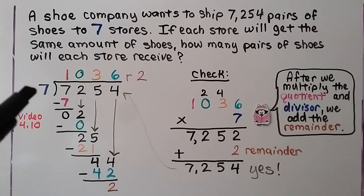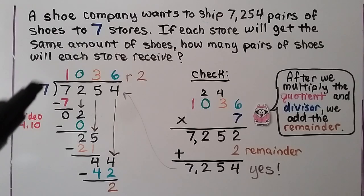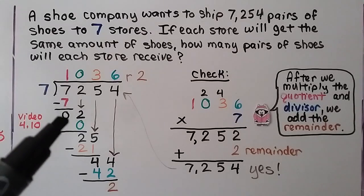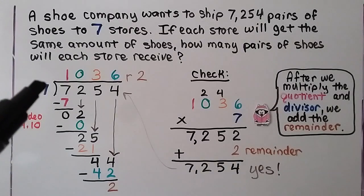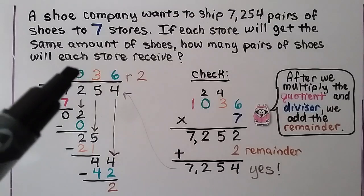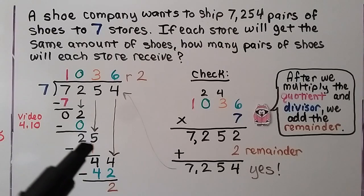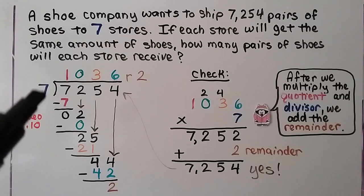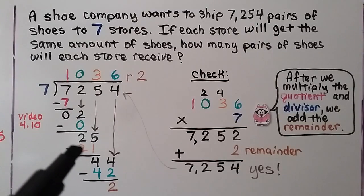We start by asking how many times can 7 fit into 7 — one time. We write a 1 above the 7, and 7 times 1 is 7. We do our subtraction and get a 0. Now it's the 2's turn to come down. How many times can 7 fit into 2 — zero, it can't fit. So we write a 0 as our partial quotient, and 7 times 0 is 0. We subtract, bring the 2 down, and it's the 5's turn to come down. We ask how many times 7 can fit into 25 — three times. We write the 3 up here. 7 times 3 is 21; we write the product and do our subtraction. We get a 4.